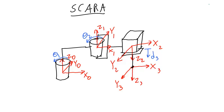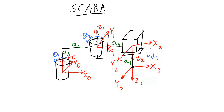The last thing I need to do is label my link lengths. I'll start at 1 and label each link length as a different variable. And here we are finished with the kinematic diagram for the SCARA manipulator.